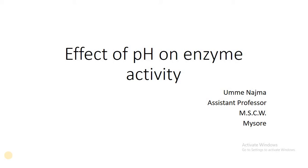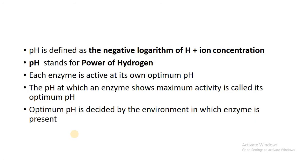pH is another most important factor that affects enzyme activity. pH is defined as the negative logarithm of hydrogen ion concentration. This means if we have more hydrogen ion concentration the pH will be less, and if we have less hydrogen ion concentration then pH will be more. Here pH stands for 'power of hydrogen' — P stands for power and H stands for hydrogen.